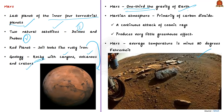The Martian atmosphere is composed primarily of carbon dioxide — an important fact for prelims. The Martian atmosphere is very thin, making the planet subject to a continuous attack of cosmic rays and producing very little greenhouse effect. Mars is usually very cold, with an average temperature of minus 80 degrees Fahrenheit, way below freezing. As noted, Mars has no liquid water on its surface today, but some space explorations have hinted at the presence of water on Mars in the past.